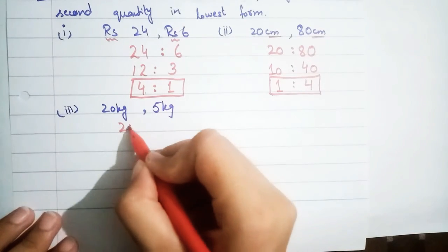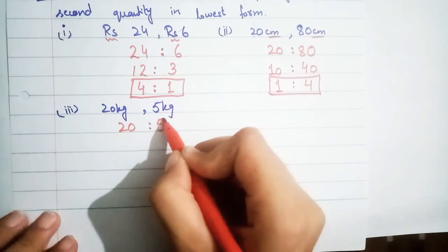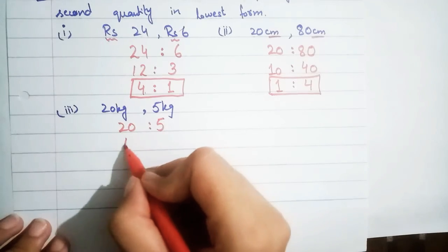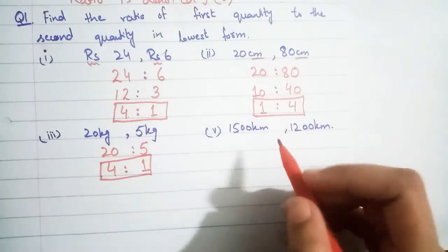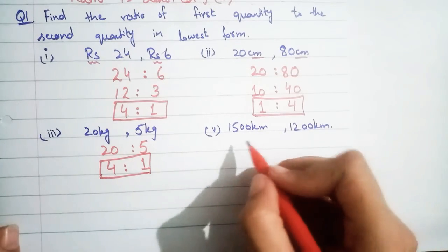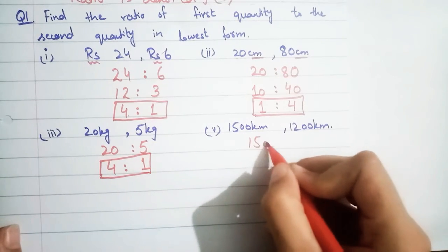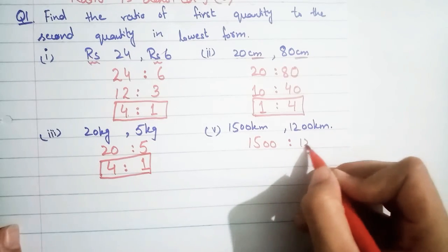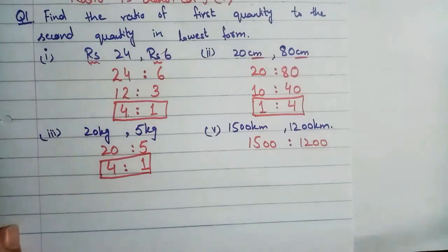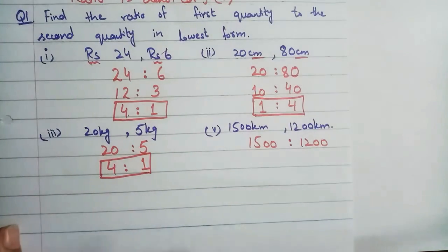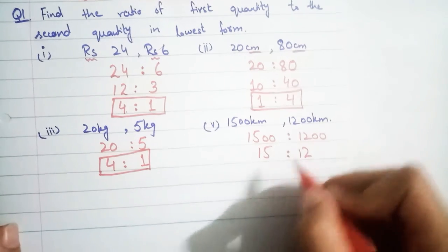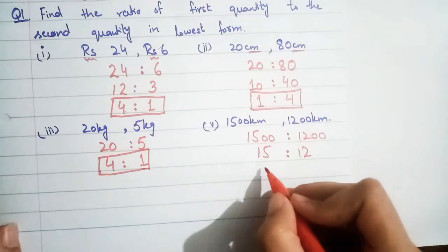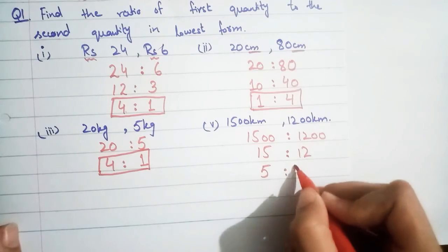Similarly, the third part gives 4 : 20, which simplifies to 1 : 5. The fifth part is 1500 km and 1200 km — kilometers and kilometers, same units, so we find the ratio 1500 : 1200, cancel the two zeros, giving 15 : 12, then divide by 3 to get 5 : 4.